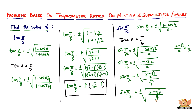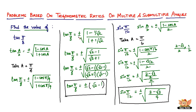That ends this problem and this video. This is how you solve most problems involving trigonometric functions of angles like π/8, π/12, π/16, and so on. The key concept is to go straight to sin(a/2), cos(a/2), or tan(a/2), and the most important thing is what value you take for a — you choose a so that a/2 equals the angle in the question. I'll see you in the next video with more problems on trigonometric ratios of multiple and sub-multiple angles.